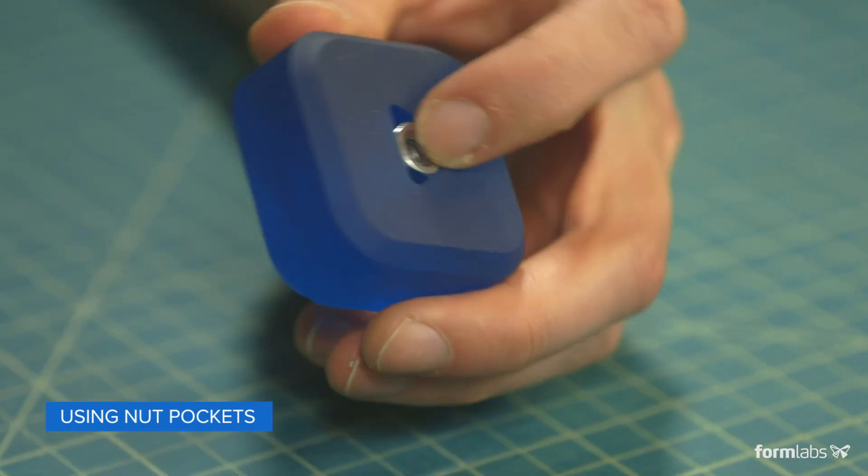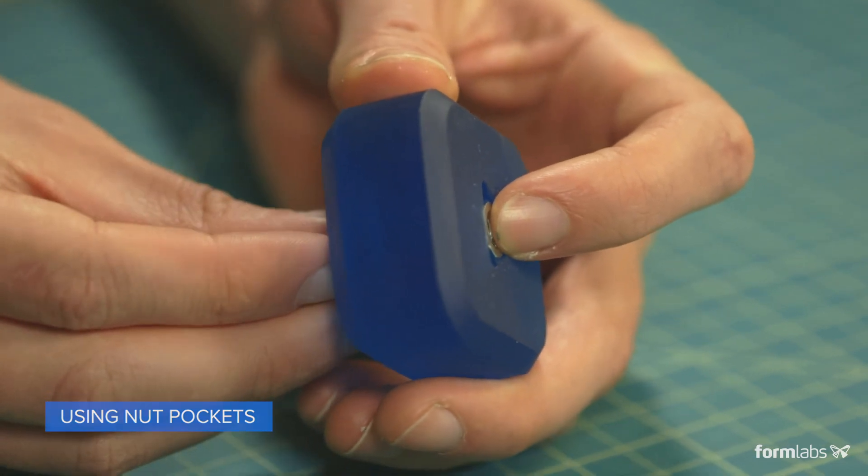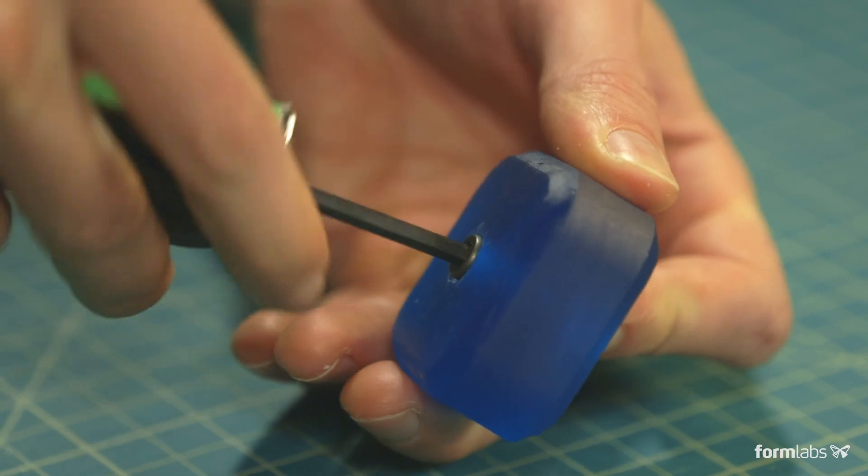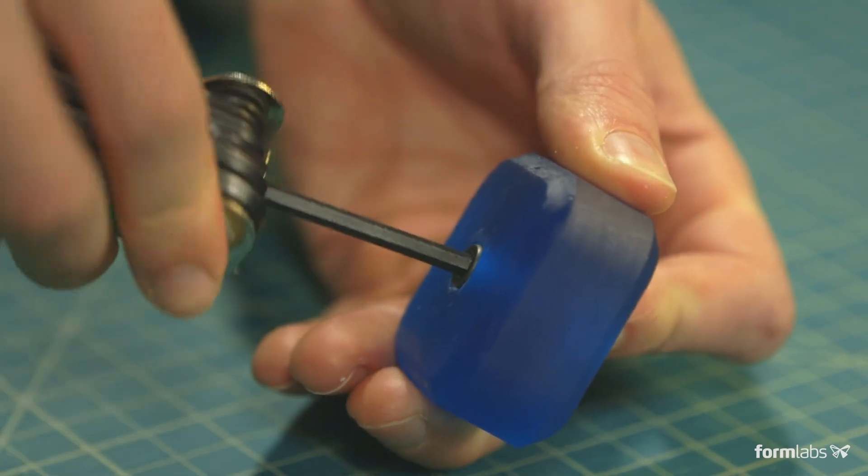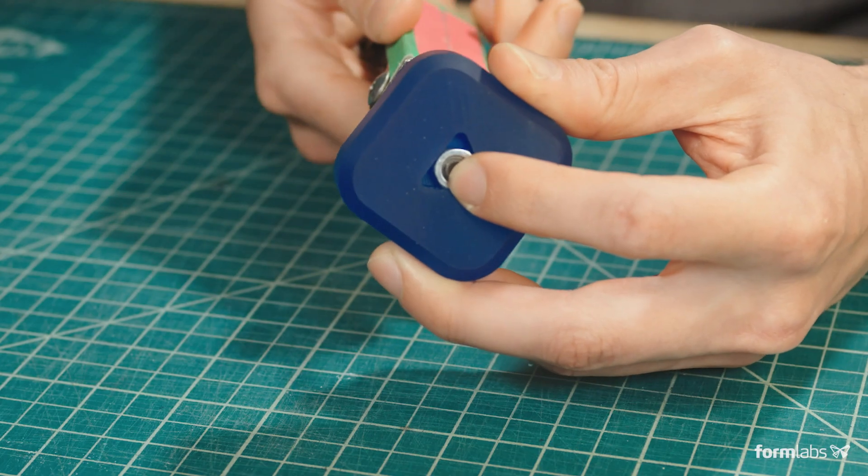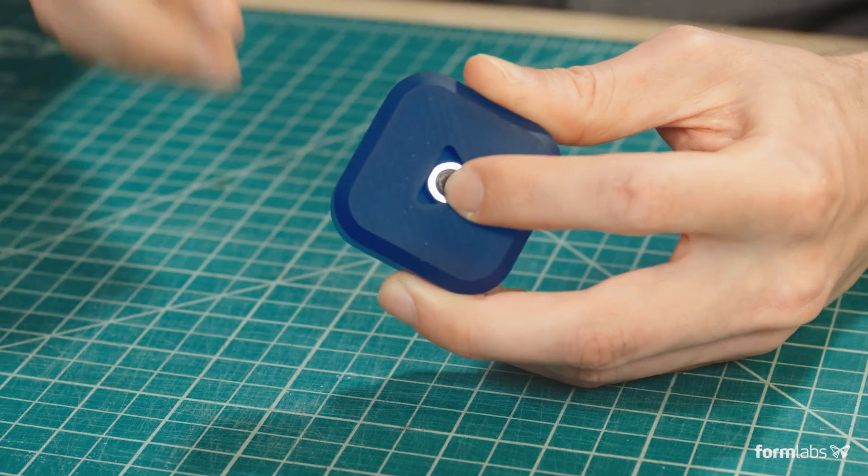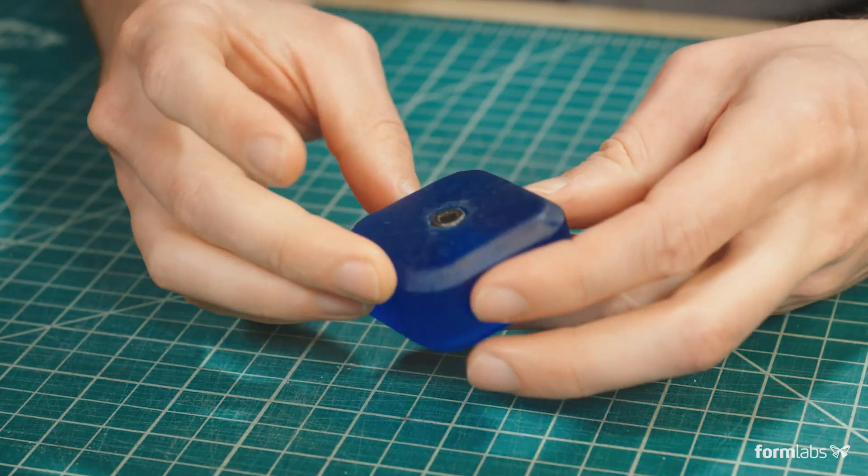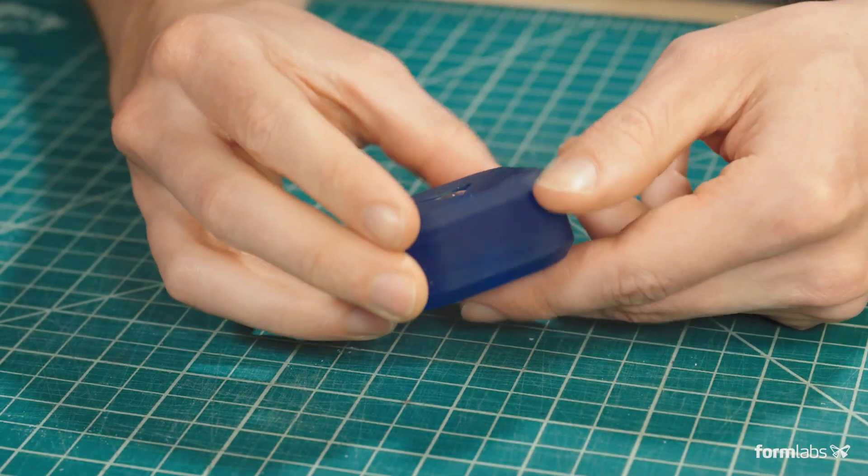This can be done mechanically by the geometry of the part or chemically by bonding metal hardware to the printed part with adhesives. Similar to threaded inserts, nut pockets use surrounding material to keep a piece of hardware in place while a screw or bolt is fastened. In this case, we're using a simple triangular pocket that prevents this hex nut from rotating during assembly.